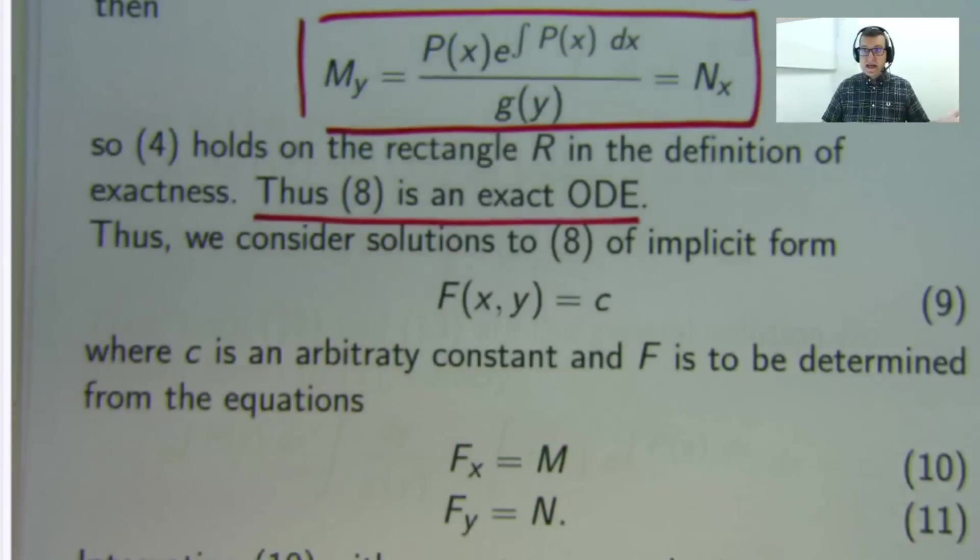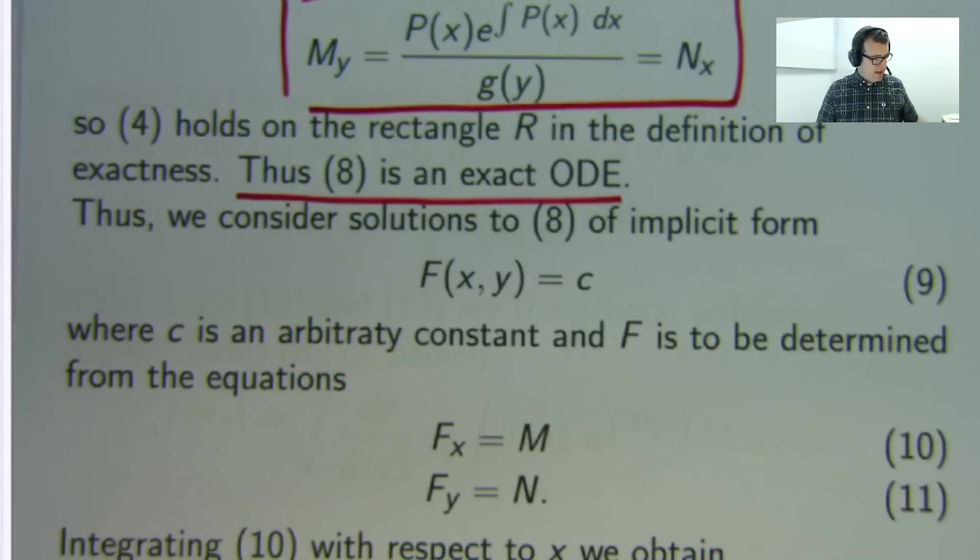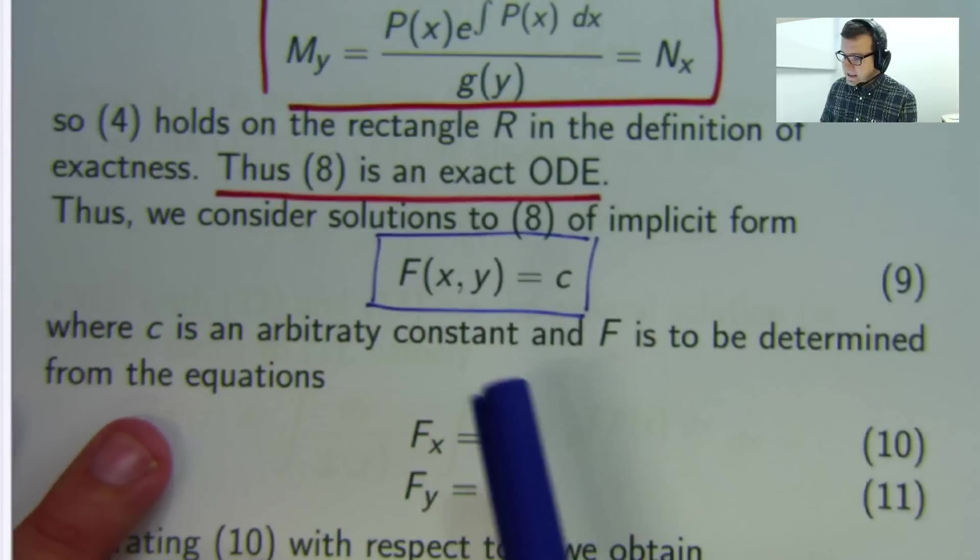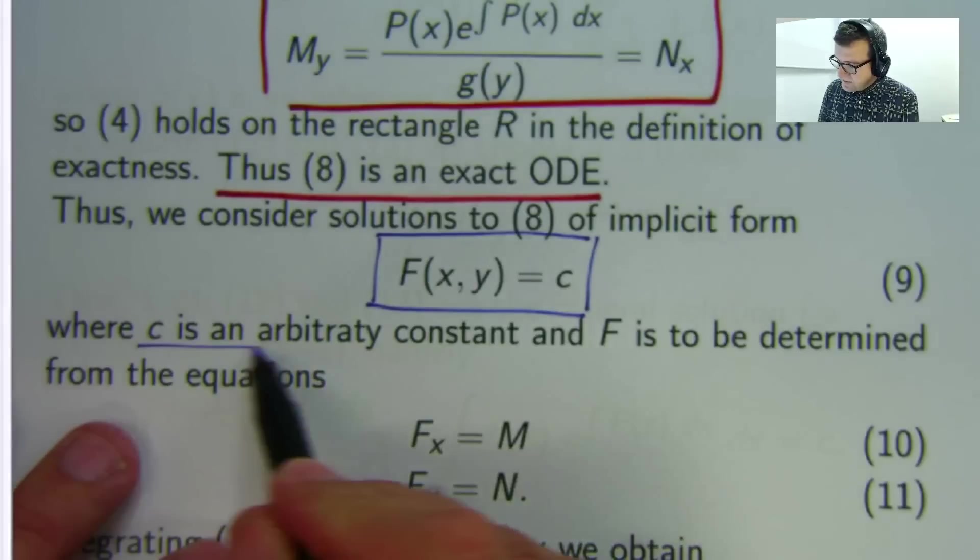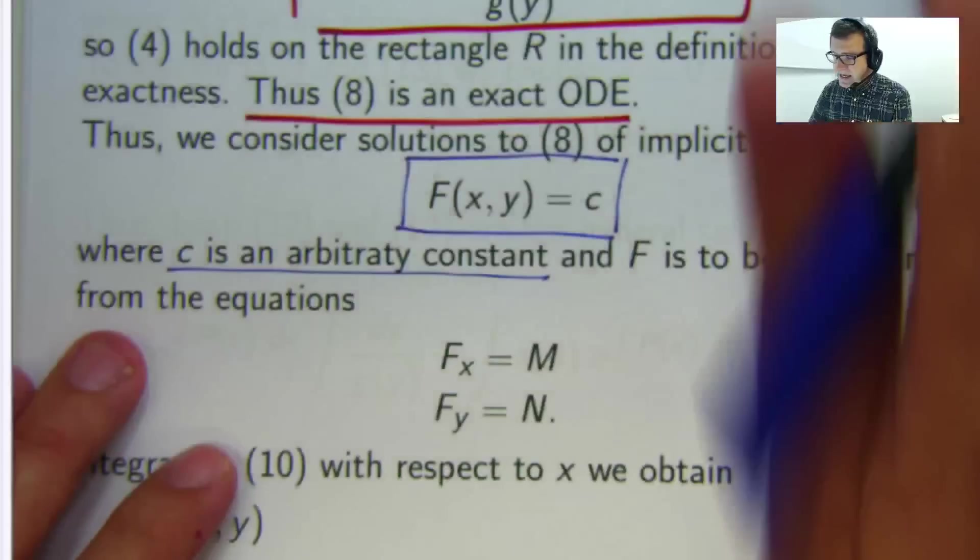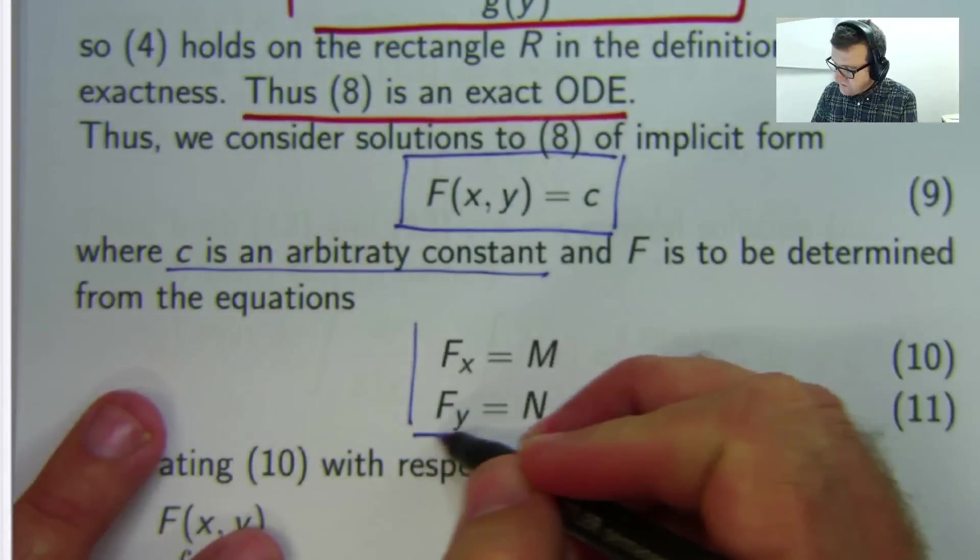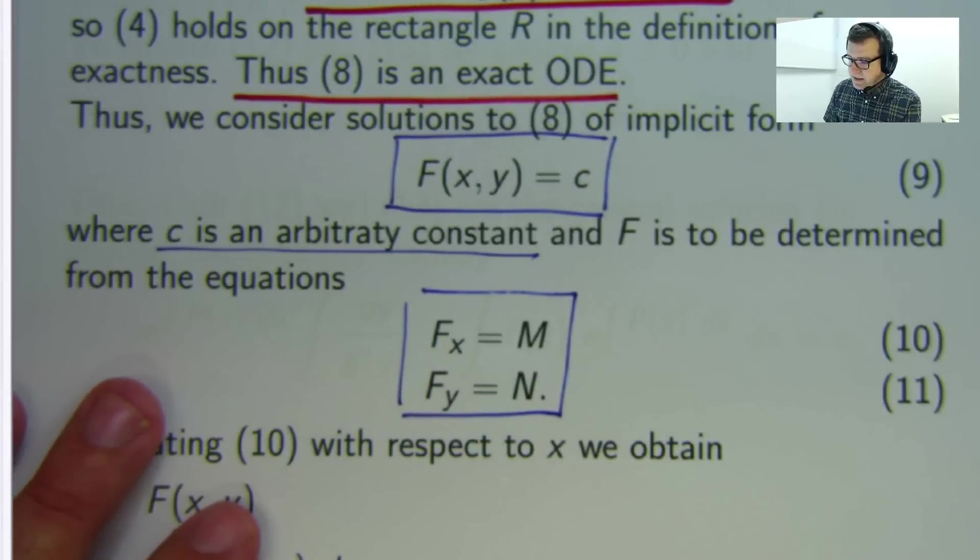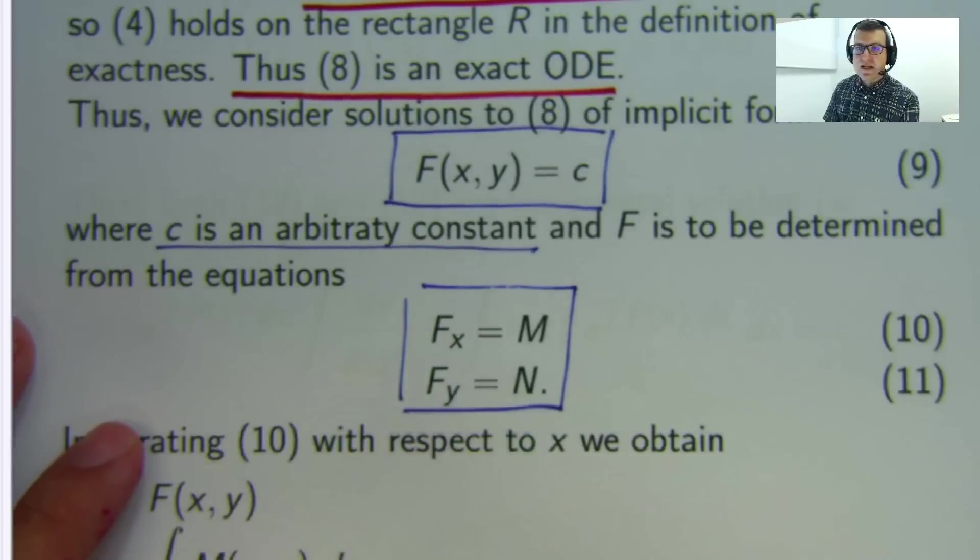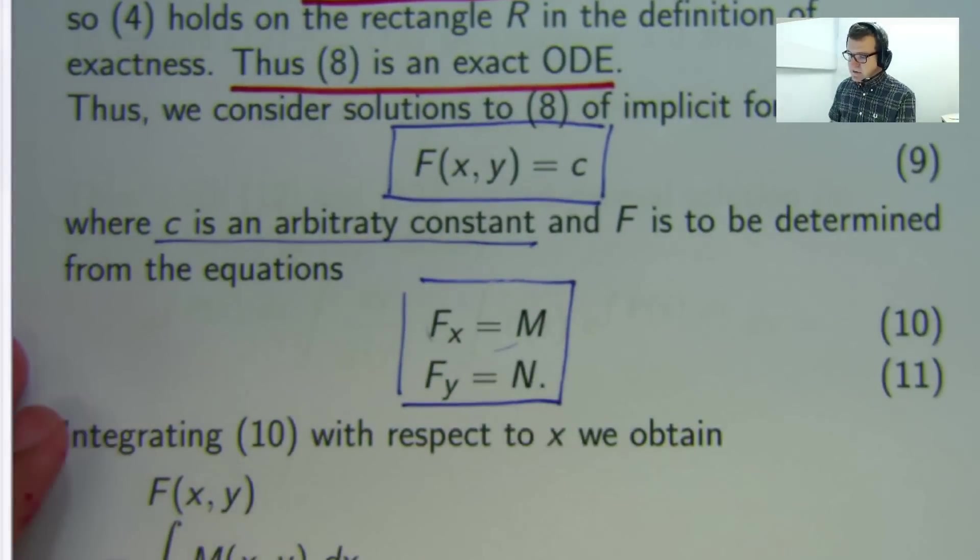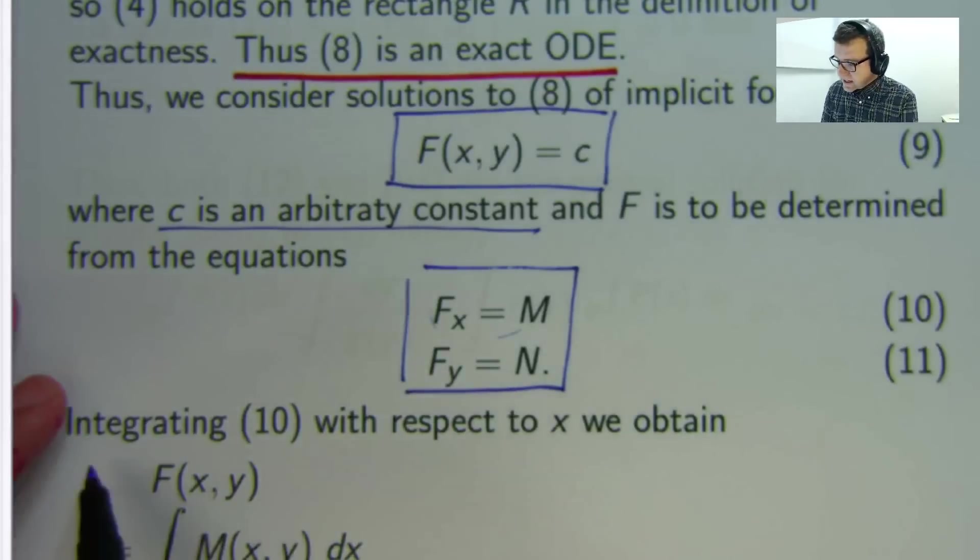So how do you solve an exact ODE? Well it kind of involves the chain rule behind the scenes. The first thing you do is you assume an implicit form like this where c is a constant and you want to determine big F and you can do that again basing things on the chain rule by solving these two equations. Again the subscripts are just partial derivatives. And now you solve each of these separately by integration. So you integrate the first one with respect to x the second one with respect to y. So let's do that. Let's actually do that.